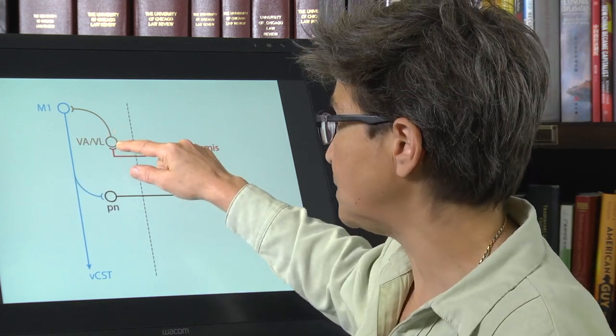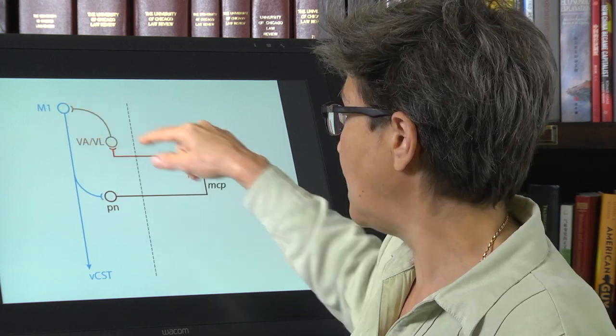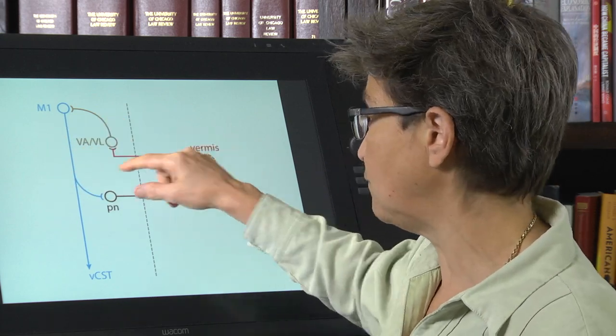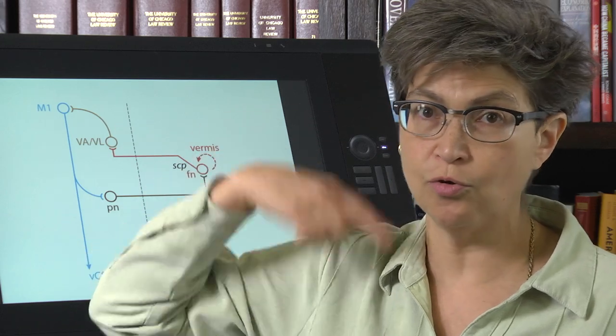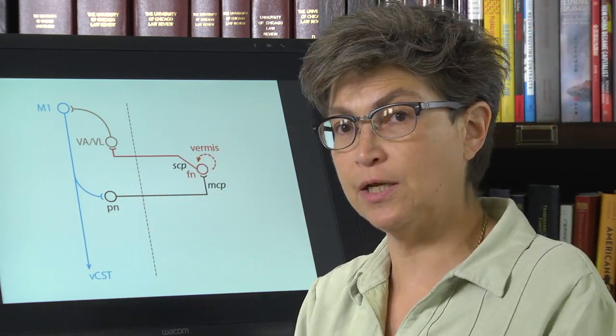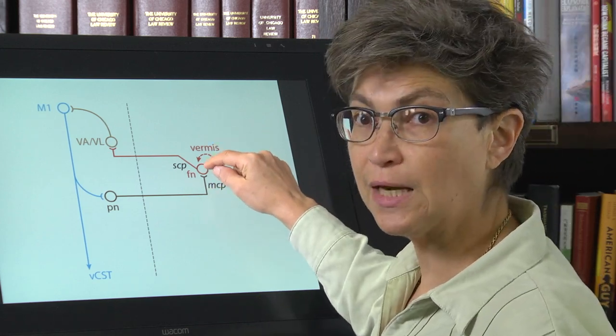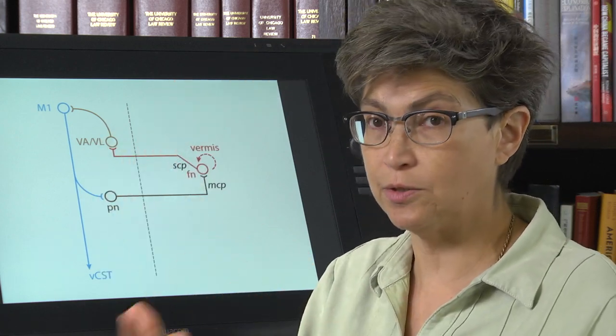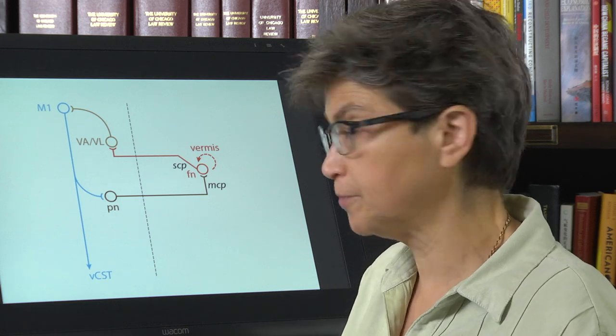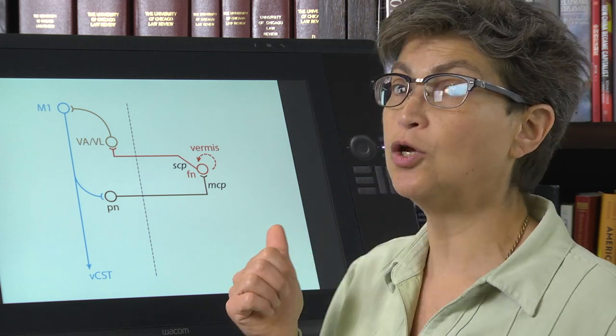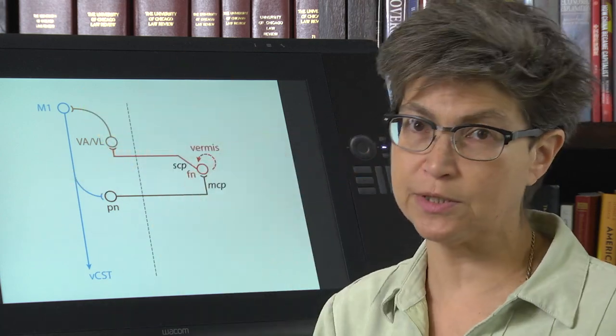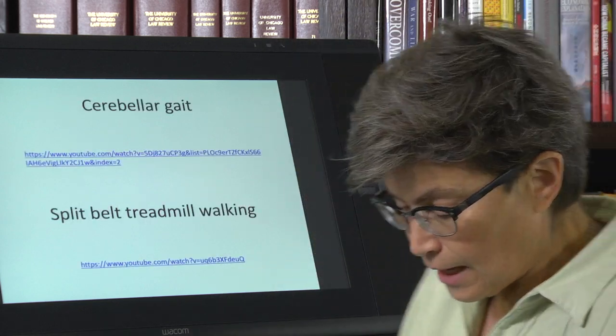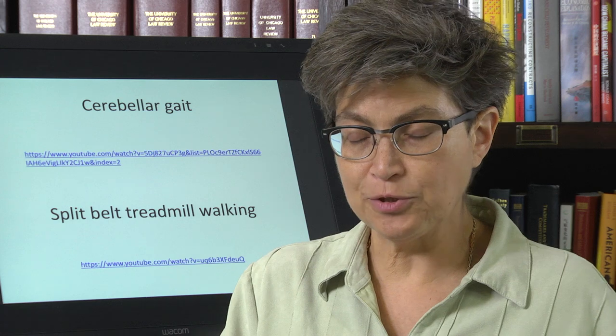VA-VL thalamus is then going to project up to motor cortex. Under normal circumstances, the answer that is given is all systems good, no correction needed. But if there is an error, then this interrupts it and makes sure that the next movement, the next iteration of the same movement is going to correct that error. So that's the closed loop. This takes on the order of 20 milliseconds. It's happening all the time, as I stand here. And it is absolutely integral.